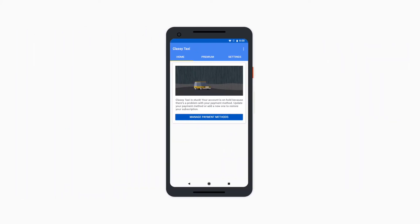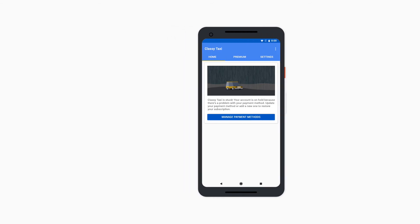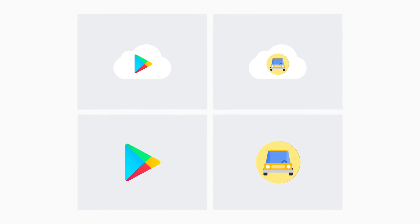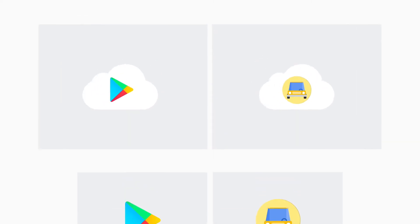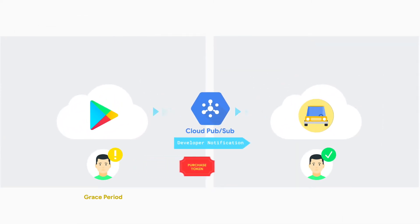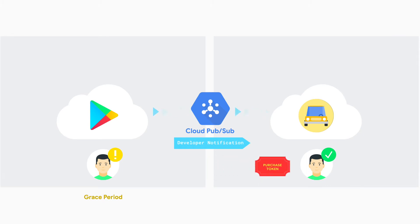When does this happen? Any time a subscription entitlement changes, such as subscription renewal, cancellation, or if the user has entered a grace period or account hold. With real-time developer notifications, you'll receive a purchase token directly from Cloud PubSub any time there is an update to an existing subscription.